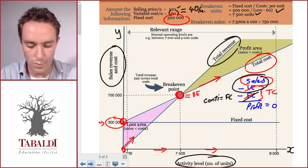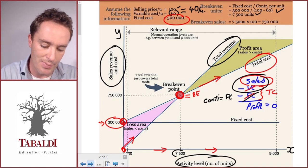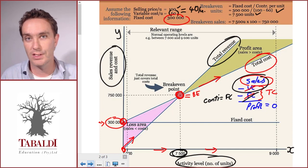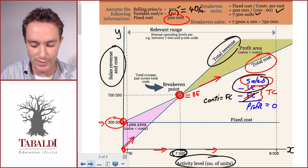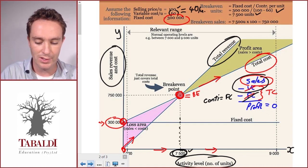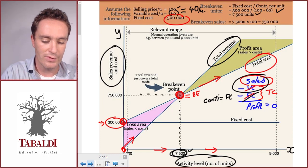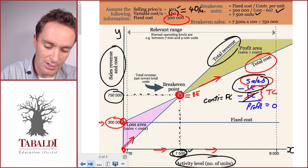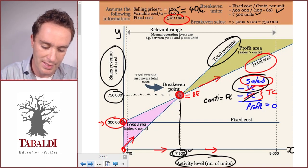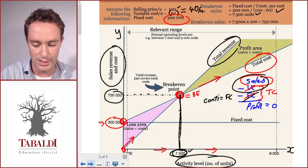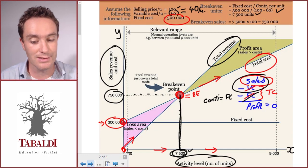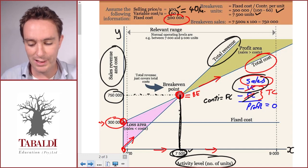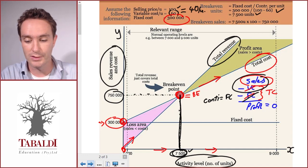How do we see that on this graph? How much would our sales be at the break-even point? Our break-even point is 7,500 units. If we follow this dotted line and read off the sales value, that's 750,000. Our total sales is represented by this vertical line.